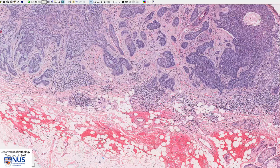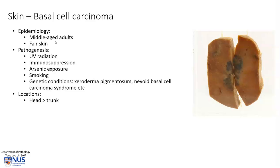Let's learn a bit more about basal cell carcinoma. This is a very common tumour, usually occurring in fair-skinned, middle-aged adults. The risk factors include UV radiation, immunosuppression, arsenic exposure and smoking, and some underlying genetic conditions.